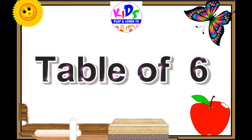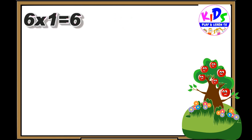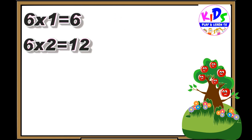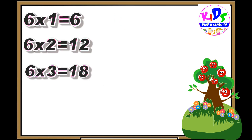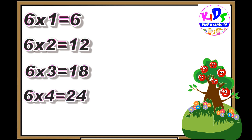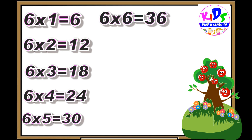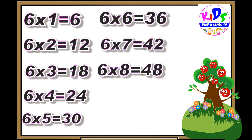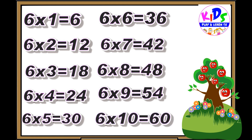Hey kids, let's repeat. 6 1s are 6, 6 2s are 12, 6 3s are 18, 6 4s are 24, 6 5s are 30, 6 6s are 36, 6 7s are 42, 6 8s are 48, 6 9s are 54, 6 10s are 60.